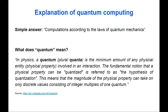What does 'quantum' actually mean? According to Wikipedia, in physics, a quantum is the minimum amount of any physical entity or physical property involved in an interaction. The fundamental notion that a physical property can be quantized is referred to as the hypothesis of quantization. This means the magnitude of a physical property can take on only discrete values consisting of integer multiples of one quantum — we have the smallest portion of some property.